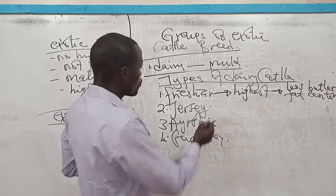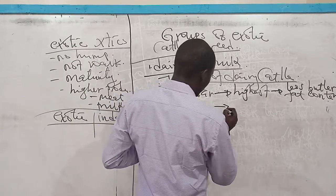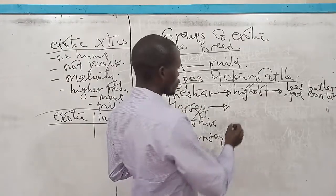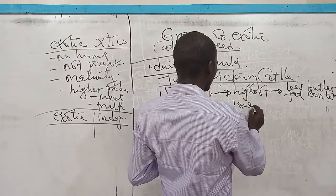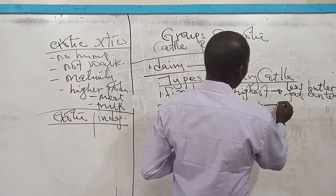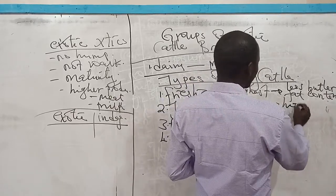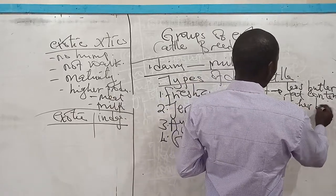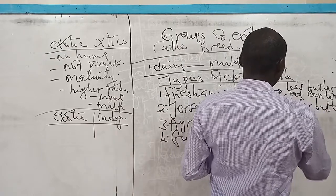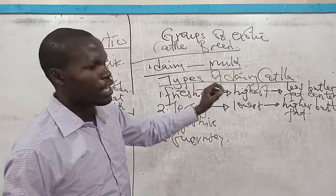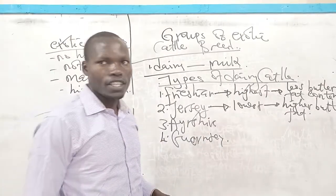Next, we look at the Jersey. Jersey, it is the lowest in milk production. Lowest in milk production, but then its milk has higher butter fat content.